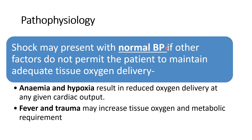Always start treatment in the compensated stage of shock. Through the various compensatory mechanisms, hypotension is a late finding in the decompensated or progressive stage. Shock can even present with normal BP throughout the stages. If the patient has other factors — for example severe anemia with hemoglobin less than 7 g/dL — or even hypoxia due to any reason (such as injuries or severe birth asphyxia in newborns), it results in reduced oxygen delivery at any given cardiac output. Fever and trauma may increase oxygen and metabolic requirements, so we should treat fever with antipyretics when moderate or high grade fever is present.